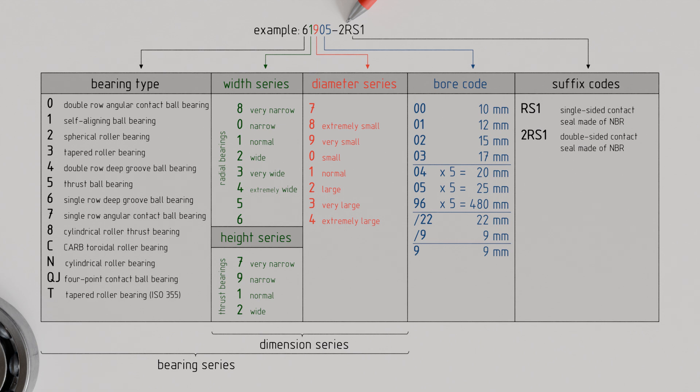In our case, the combination 2RS1 indicates double-sided contact seals made of NBR.